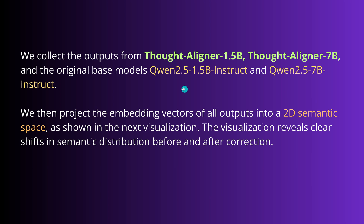Which model did they use? They went with a Qwen 2.5 1.5 billion free trainable parameter instruction-tuned model, and a Qwen 2.5 7B instruct model. With fine-tuning they created the thought aligner 1.5B and 7B models.